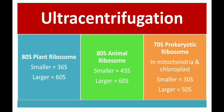Moving forward to ultracentrifugation — it is a specialized technique used to spin samples at exceptionally high speed. Ultracentrifugation provides knowledge about different kinds of ribosomes present in eukaryotes and prokaryotes. In eukaryotic plant cells, ribosomes are 80S, where S is the sedimentation coefficient, having a smaller unit of 36S and a larger unit of 60S. In animal cells there are also 80S ribosomes, with a smaller unit of 45S and a larger unit of 60S. In prokaryotic cells, ribosomes are 70S — they sediment faster than eukaryotic ribosomes. Prokaryotic ribosomes are found in mitochondria and chloroplasts, with a smaller unit of 30S and a larger unit of 50S.